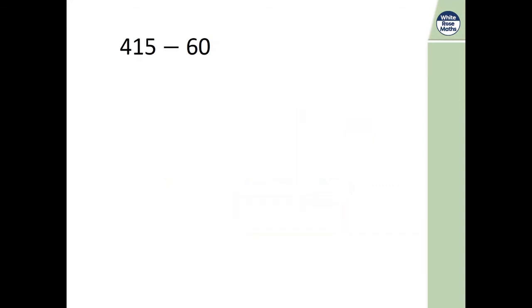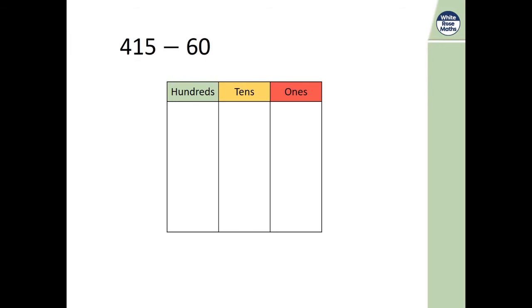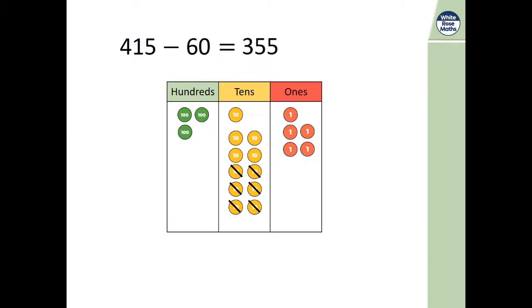Now let's consider this question. 415 subtract 60. We'll use place value counters this time. Here's our 415. And we need to subtract 6 10s. You'll notice that we only have 1 10 here. So what should we do? That's right. We'll exchange 100 for 10 10s. Let's do that now. Now we can subtract 6 10s. Can you see what's left? We have 300s, 5 10s and 5 1s. So it's 355.